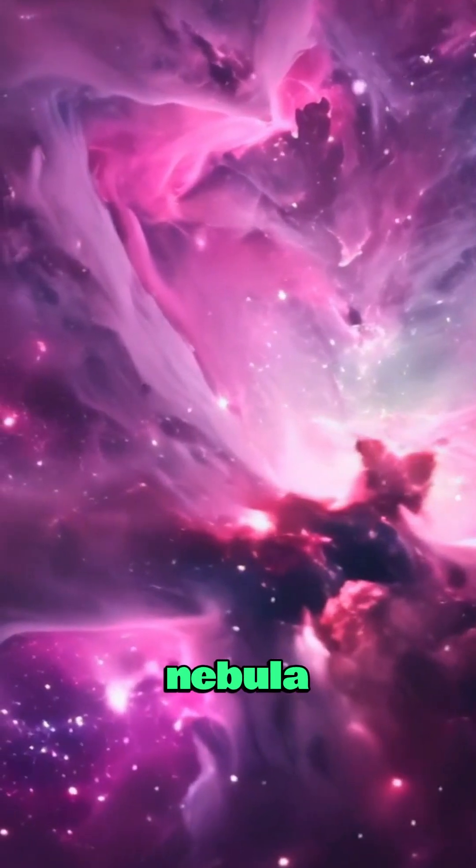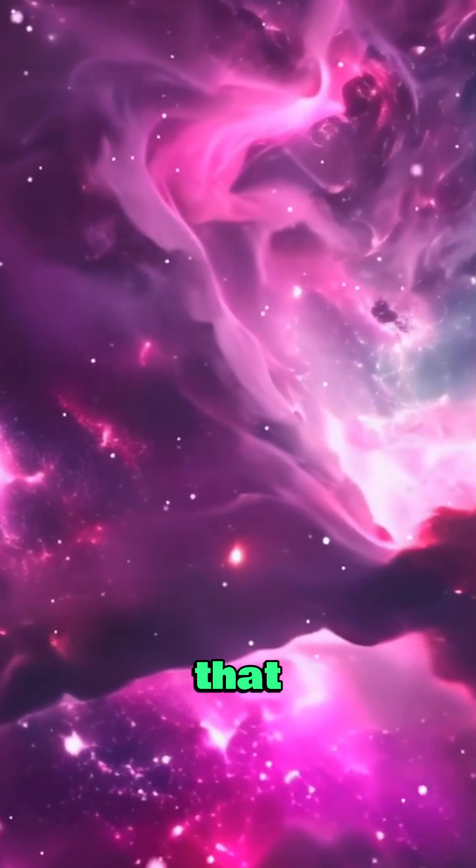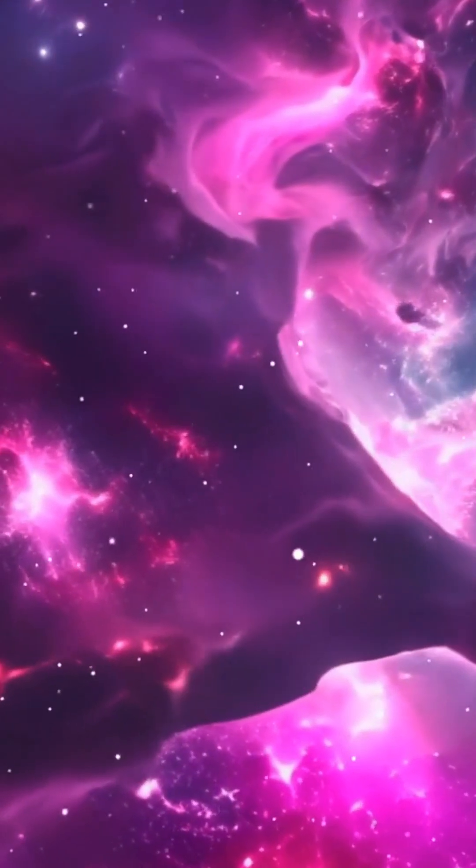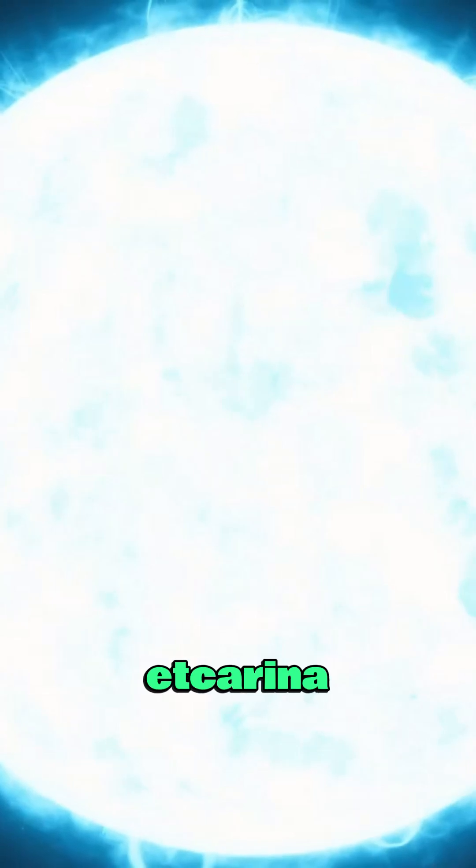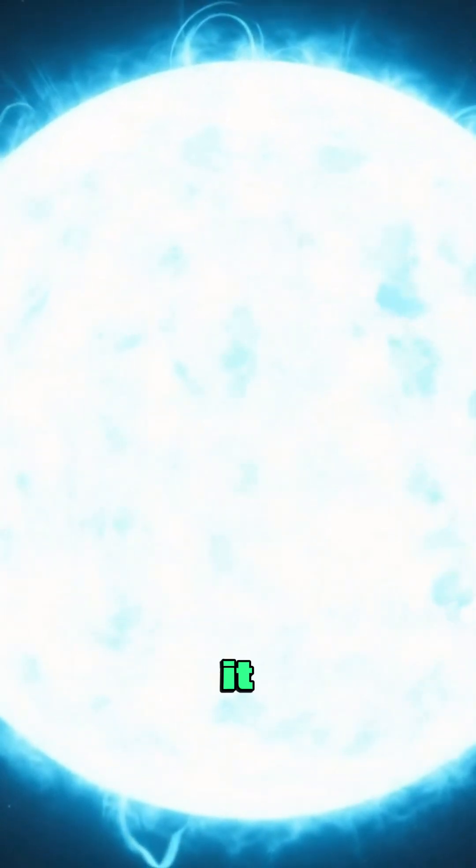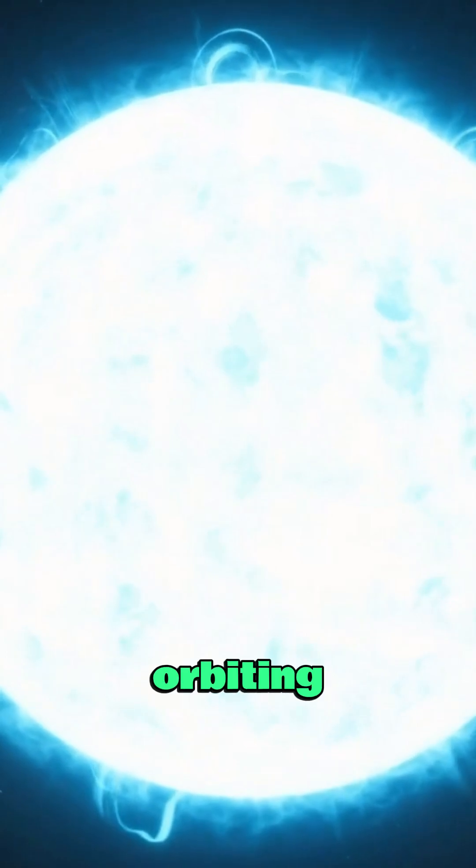It's surrounded by a nebula, a colorful cloud of gas and dust that glows with the energy it emits. What's fascinating is that Eta Carinae is actually a binary system, meaning it consists of two massive stars orbiting each other.